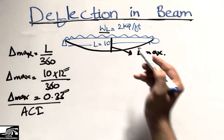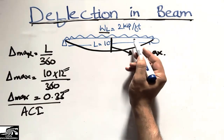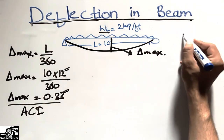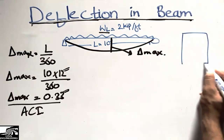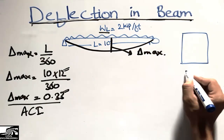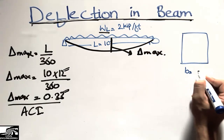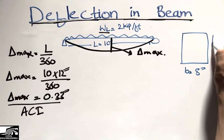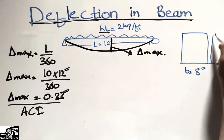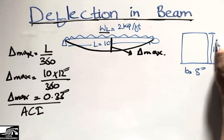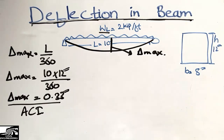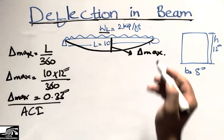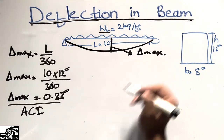Now, for this beam's cross-section, the width of the beam is 8 inches and the height of the beam is 12 inches. We will use these dimensions to find the moment of inertia and then calculate the maximum deflection.